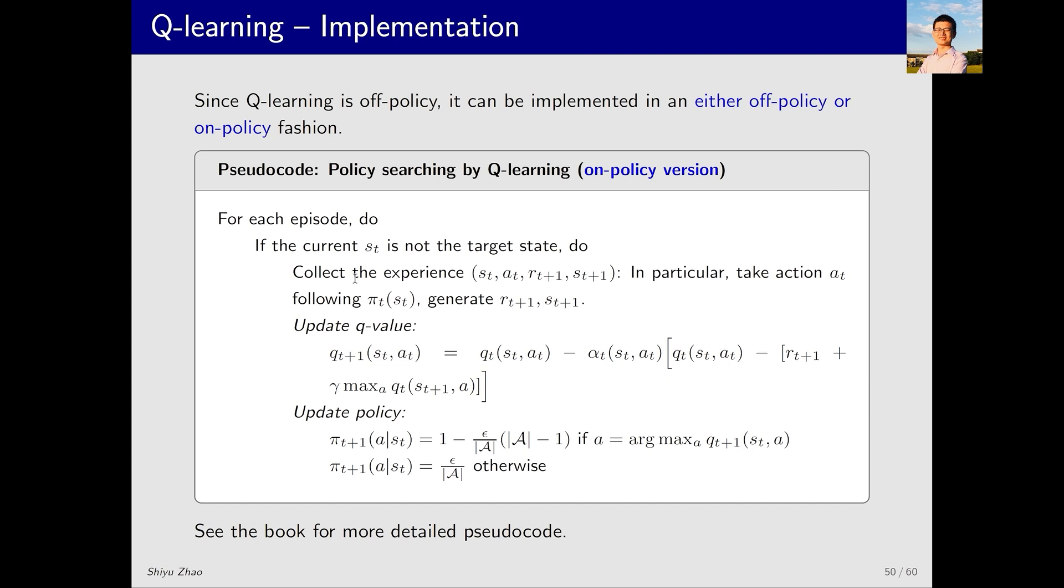Now, let's examine the on-policy and off-policy implementations of Q-Learning. The on-policy version of Q-Learning is identical to SARSA except the Q-value update part. In the SARSA algorithm the update involves the term Q(s_t+1, a_t+1). It has now been replaced with the term above the line and the remaining policy update also uses epsilon-greedy.